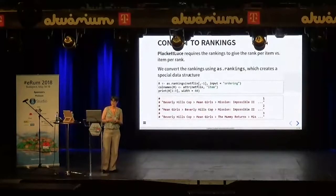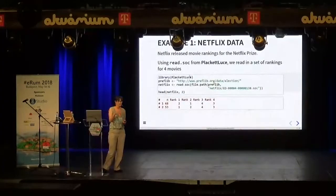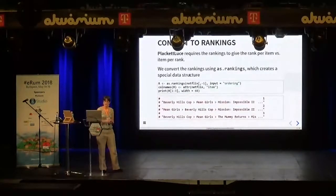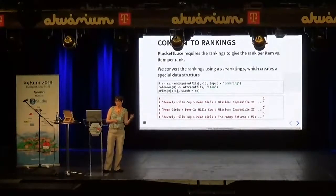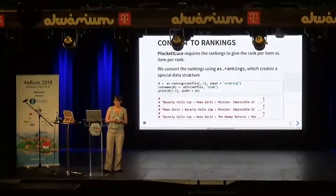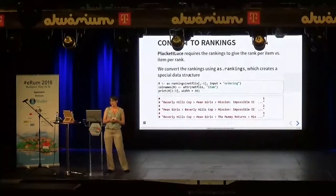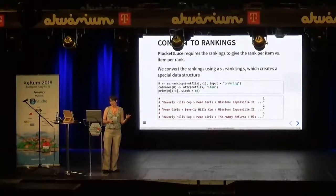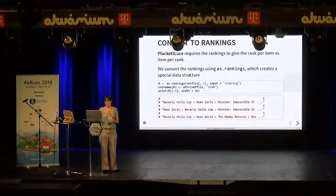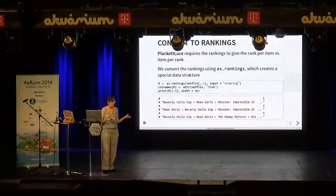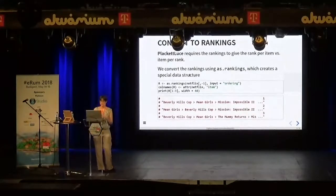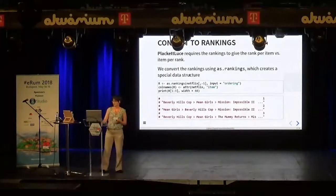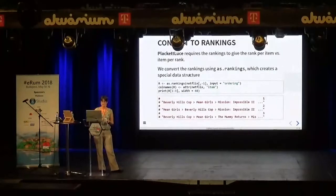Our read.soc function also collects the names of the items — here they were just called item 1, 2, 3, 4, but we're talking about movies. They're saved in an attribute which we can add to the rankings object as column names of the underlying matrix. One of the advantages of creating a special type of object is we can have things like print methods. If we print out the first few rankings, we get a fairly user-friendly printout — we can see the first ranking has Beverly Hills Cop ranked first, then Mean Girls, then Mission Impossible 2.